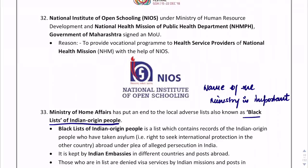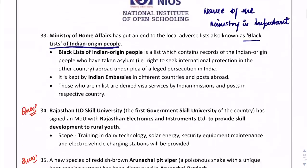A question could come on this: an end has been put to the Local Adverse List, also known as the black list of Indian-origin people. A question could ask about the ministry — what is the name of the ministry which took this step? The answer is the Ministry of Home Affairs.